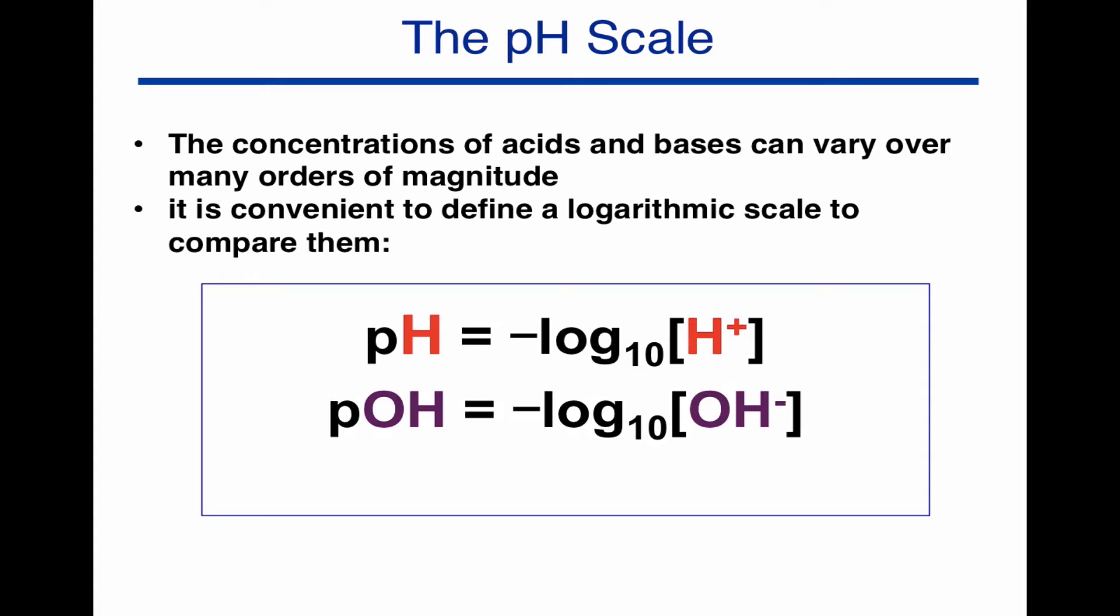If we're looking at an acid we might want to use the first, if we're looking at a base we might want to use the second. But often we want to think about them both at the same time, and luckily this is really easy because at room temperature the pH plus the pOH is equal to 14. So if we know one of them we can always work out the other by taking it away from 14.